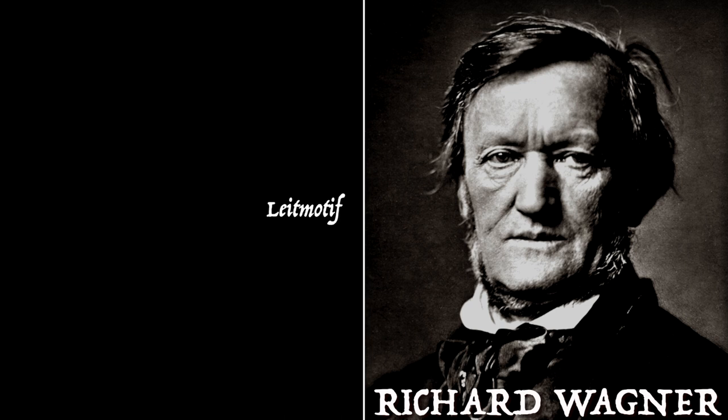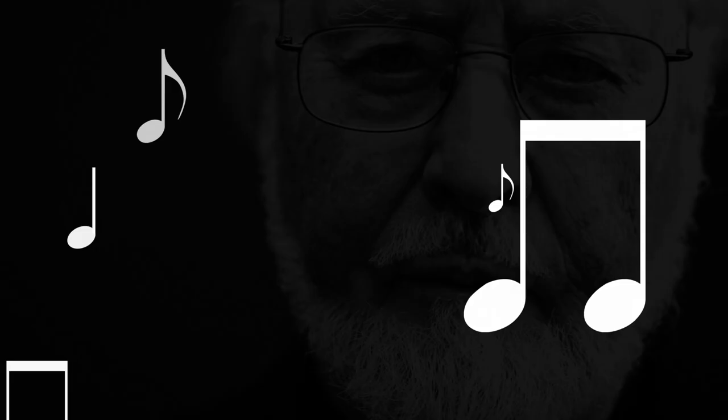These three musical themes are examples of what is called a leitmotif, popularized by German composer Richard Wagner. A leitmotif is a recurring musical melody associated with a person, place, or thing. The concept was first introduced in operas as far back as the early 17th century, but has always been prevalent in film score composition. And perhaps no composer has utilized leitmotifs better than John Williams.